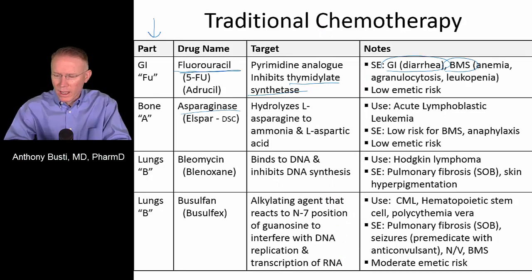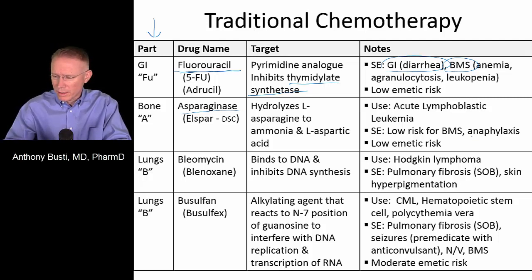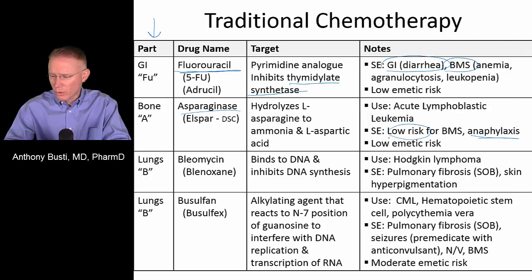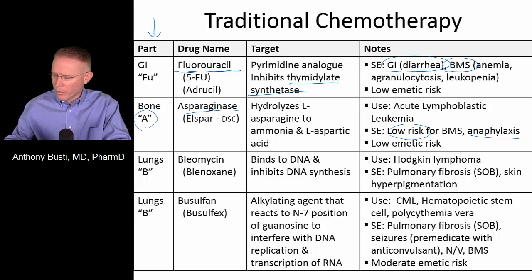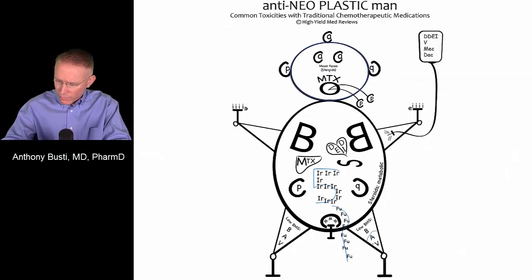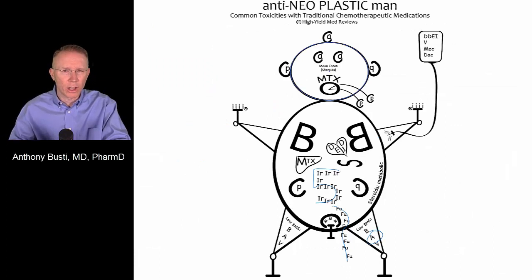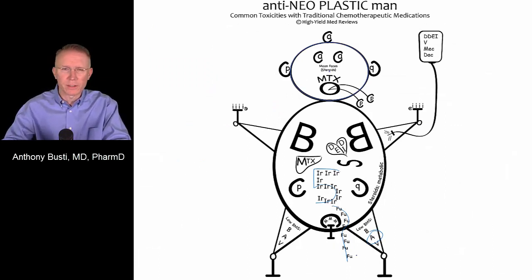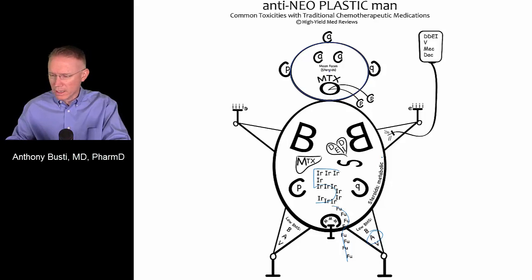Asparaginase doesn't have a lot of dose-limiting toxicities. One of the biggest problems with it is anaphylactoid reactions or anaphylaxis. It actually has a low risk for bone marrow toxicity. When you look at the part of the body involving bone, the letter A reflects those drugs that have a low bone marrow suppression risk, placed where the femur would normally be to correspond to that anatomical location.